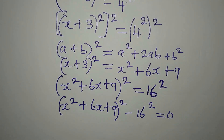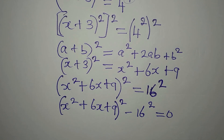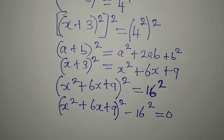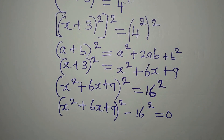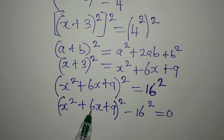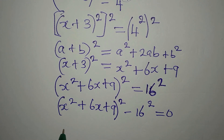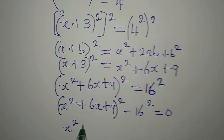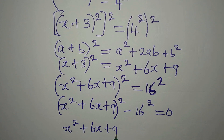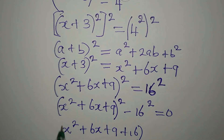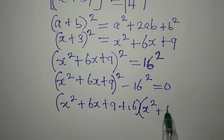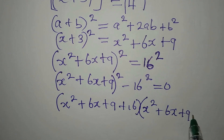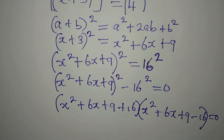Now we have difference of two squares. To apply it, you add the two terms in one bracket and subtract them in the other bracket. So in the first bracket we have (x² + 6x + 9 + 16), and in the second bracket we have (x² + 6x + 9 − 16), then we equate everything to zero.